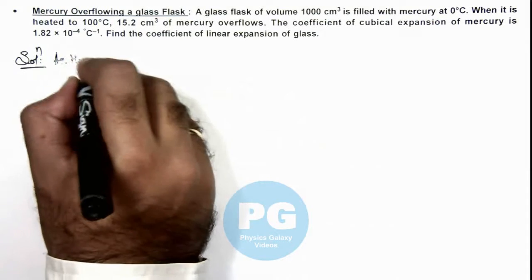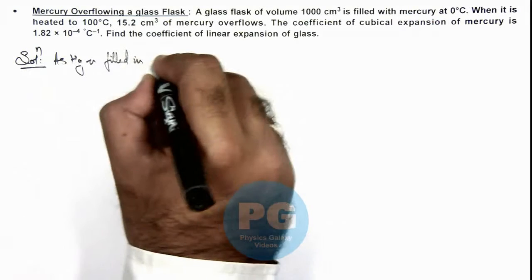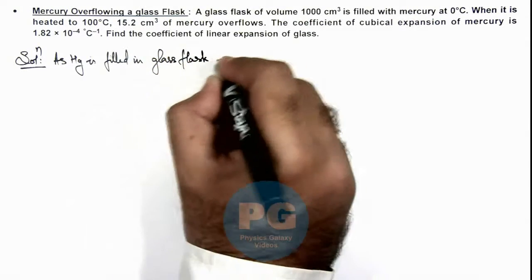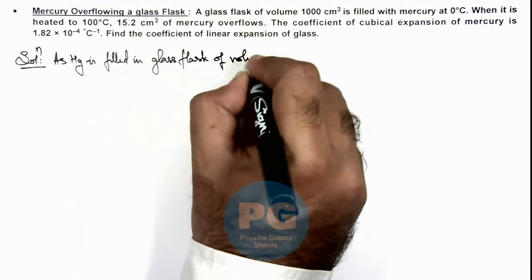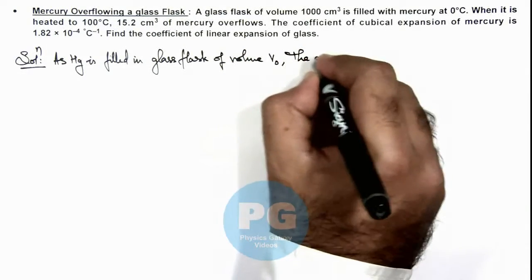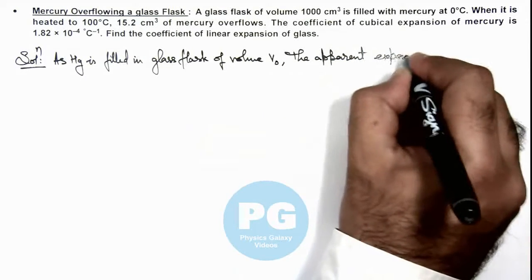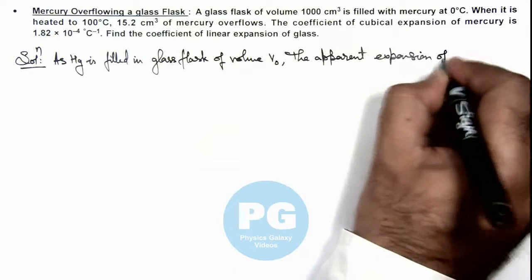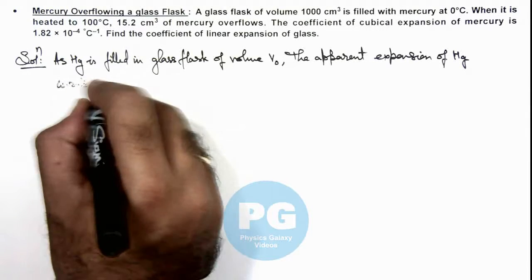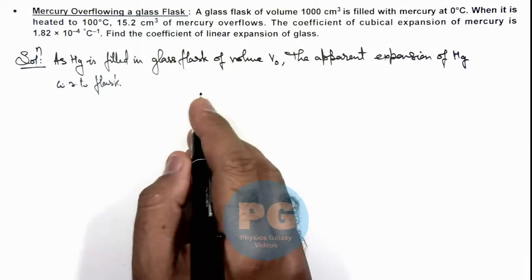So we can write, as mercury is filled in glass flask of volume V₀, we can write the apparent expansion of mercury with respect to glass. This concept we already studied in concept videos.